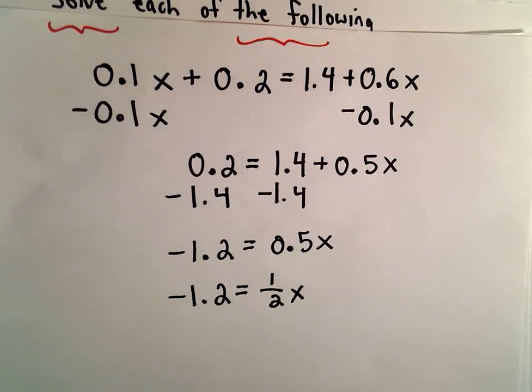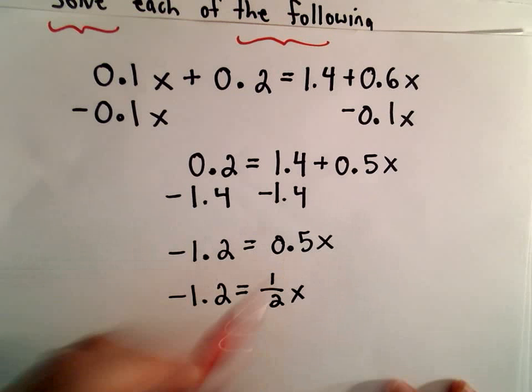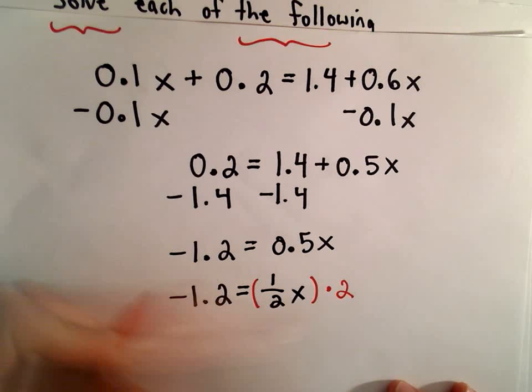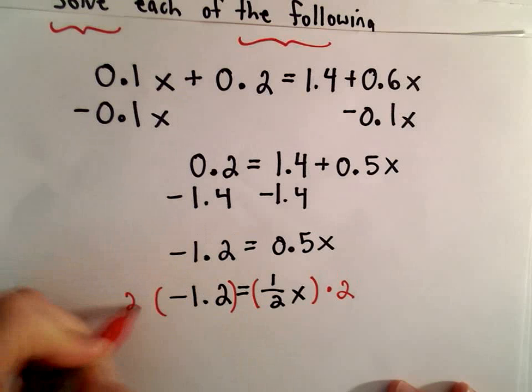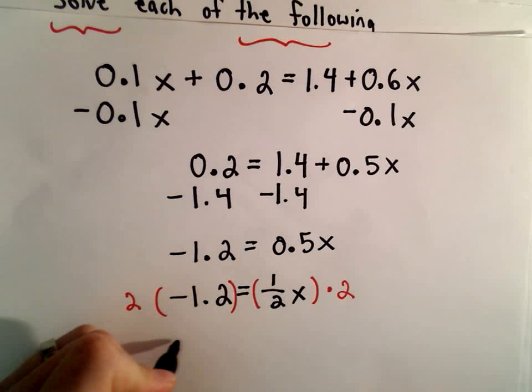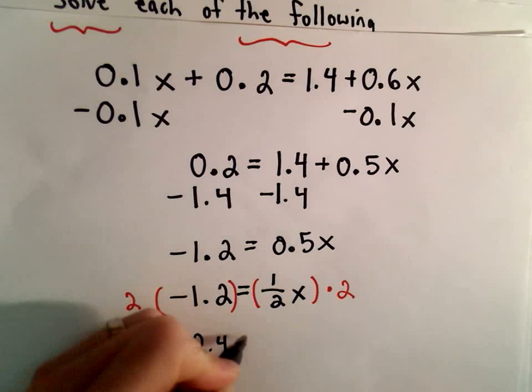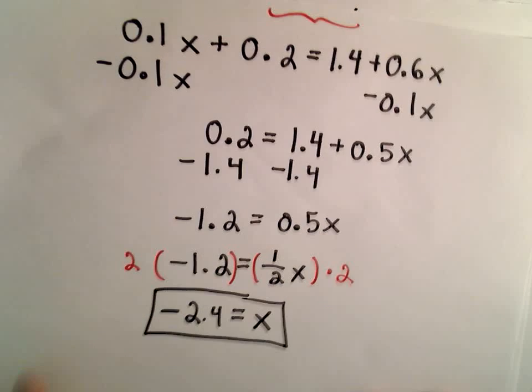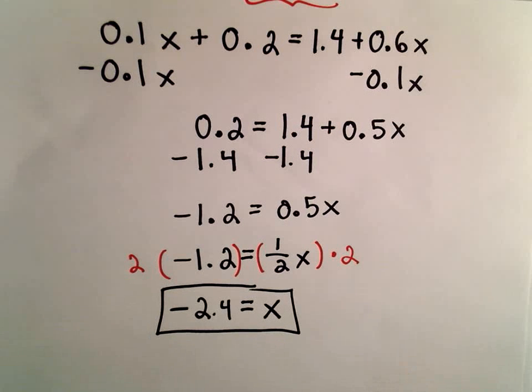So to solve for x, and you could have done this at the step above as well, I'm just going to multiply both sides by 2. So on the left side, 2 times negative 1.2 will be negative 2.4. We'll be left with positive 1x on the right side, and we have our solution to the second equation.